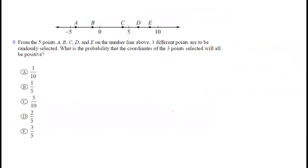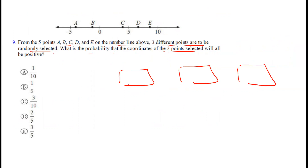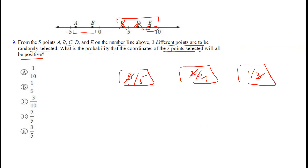Question nine: from five points A, B, C, D, E on a line, three are selected randomly. We need the probability that all three selected points have positive coordinates. Two points are negative and three are positive. The probability of selecting three positive points: (3/5) × (2/4) × (1/3). The 3s cancel, giving 2/20 = 1/10. The correct option is A.